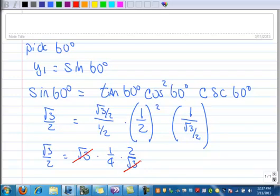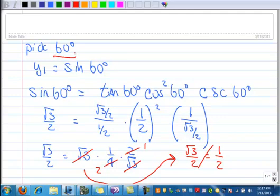The square root of 3 cancels with that one. 2 goes into 2 once, 2 goes into 4 twice, and I'm running out of room, so I'm going to continue this over here. So, the left-hand side, I have the square root of 3 over 2 equals 1 half. Obviously, this is not true. So, there I've just disproved that statement using the counter example of 60 degrees.